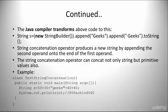The Java compiler transforms the above code internally. The string concatenation operator produces a new string by appending the second operand onto the end of the first operand. The string concatenation operator can concat not only strings, but primitive values also.